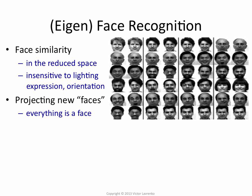You can also use it for things like face similarity. You could take two faces and compute similarity in terms of pixel values, or in terms of eigenvectors. If you do it in terms of eigenvectors, you end up with a similarity function that's largely insensitive to lighting, orientation of the face, and some facial features. So you can still recognize people even if they tilt their head, with a reasonable amount of accuracy.